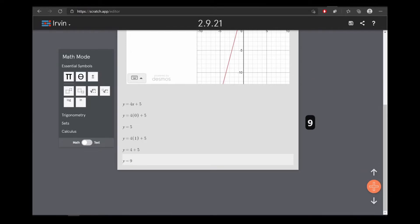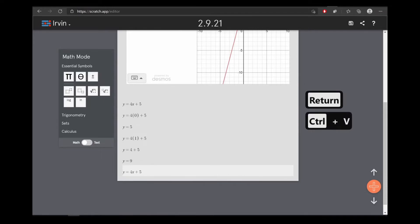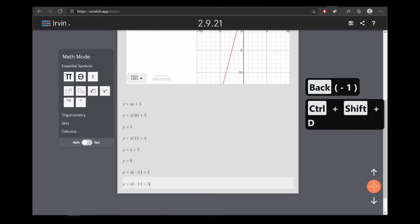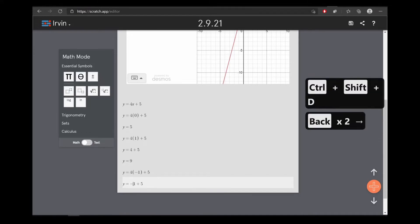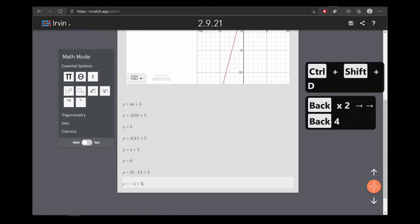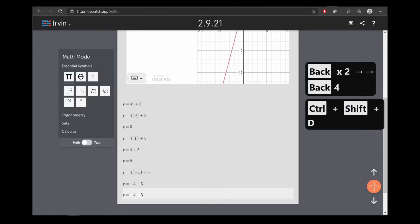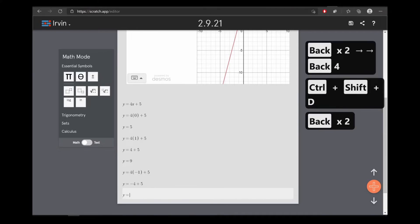Now, one more point. Let's do negative 1. Duplicate. We have negative 4, which equals 1.